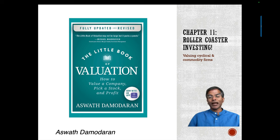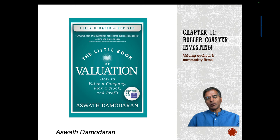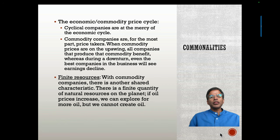Hi, welcome back to chapter 11 of the Little Book Evaluation. In this chapter, I want to focus on cyclical and commodity companies. What do they share in common? With both groups, you're at the mercy of a macro component.